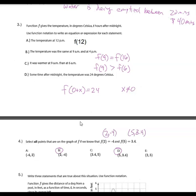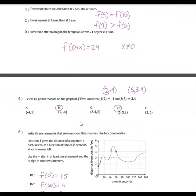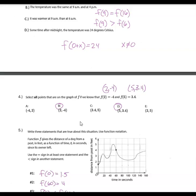The function F gives temperature in degrees Celsius T hours after midnight. The temperature at 12 PM is F of 12, since that's 12 hours after midnight. The temperature was the same at 9 AM as at 4 PM: F of 9 equals F of 16, because 4 PM is 16 hours past midnight. It was warmer at 9 AM than at 6 AM: F of 9 is greater than F of 6. And for 'sometime after midnight,' I wrote F of 0 plus X, where X is greater than 0, meaning any number of hours greater than zero past midnight, giving a value of 24.